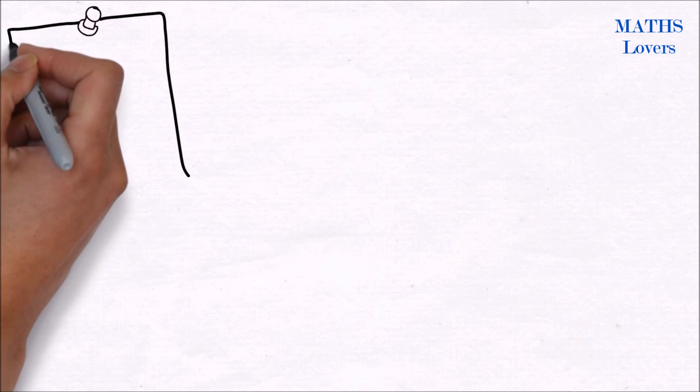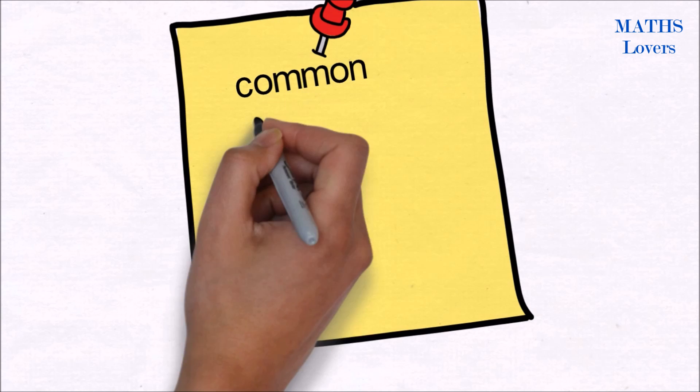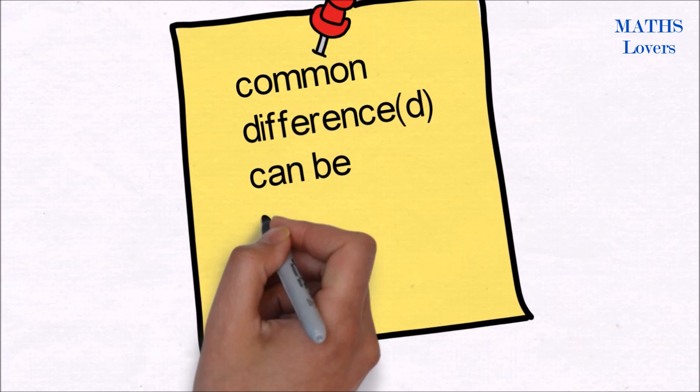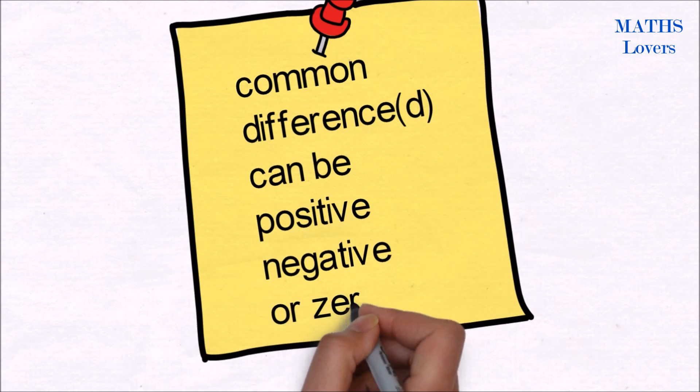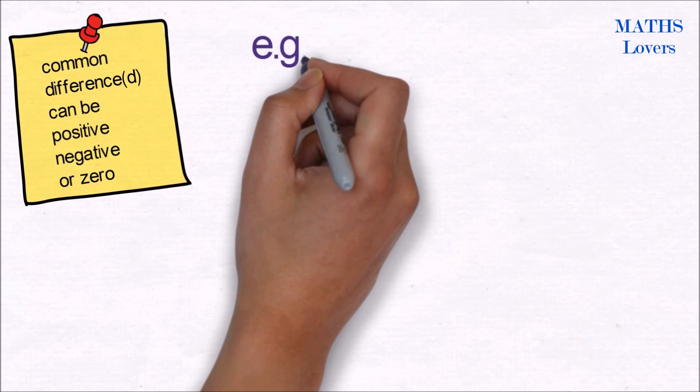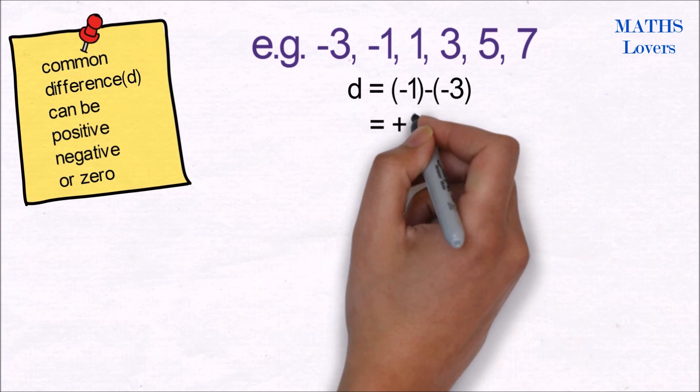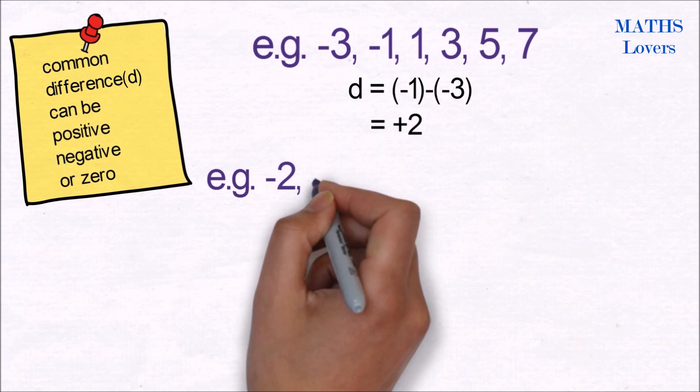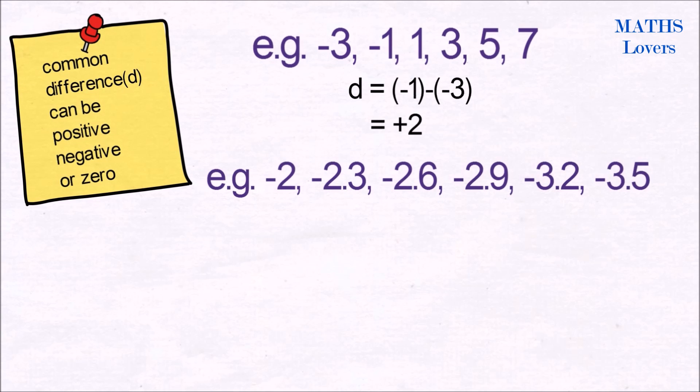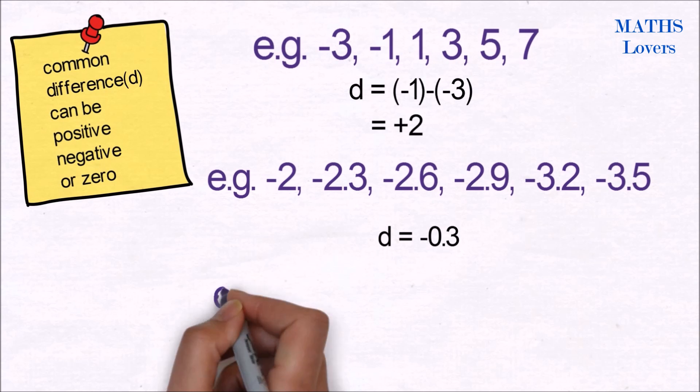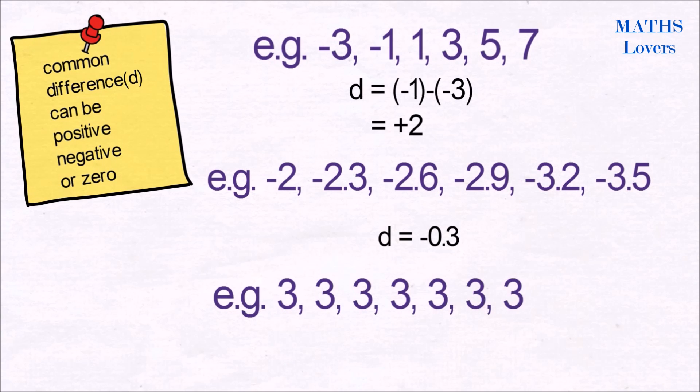Note that in arithmetic progression, common difference d can be positive, negative, or zero. Let's see it by some examples. In the first example we can see that d equals plus 2. In the second example of AP, d equals minus 0.3. Let's see one more example where d equals 0.